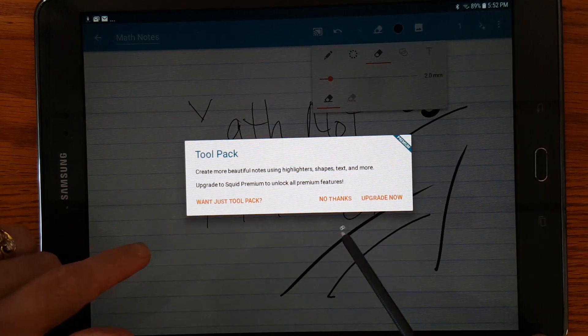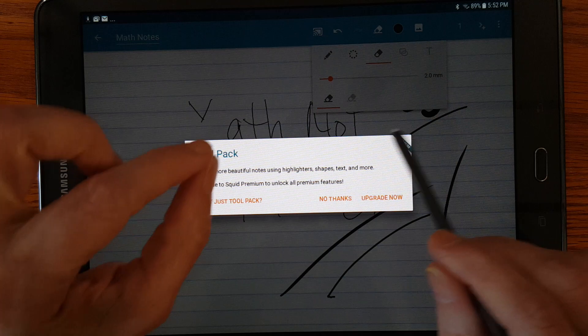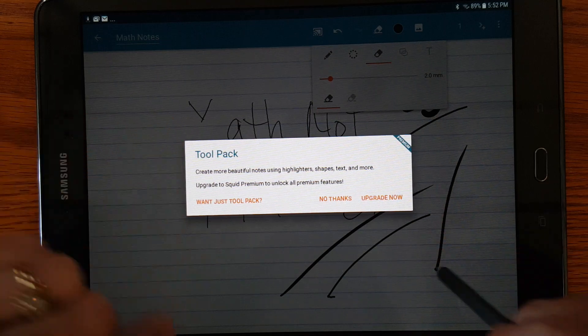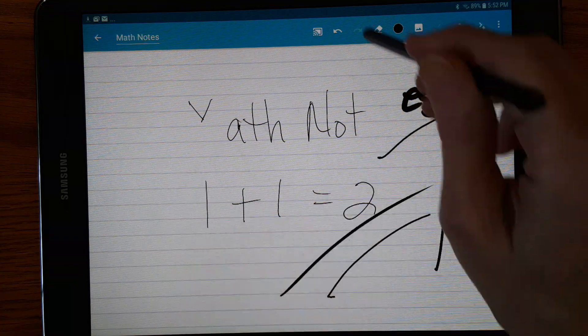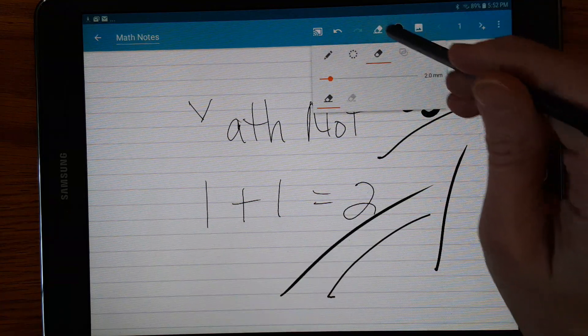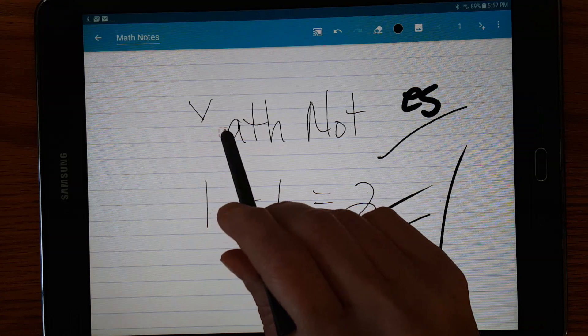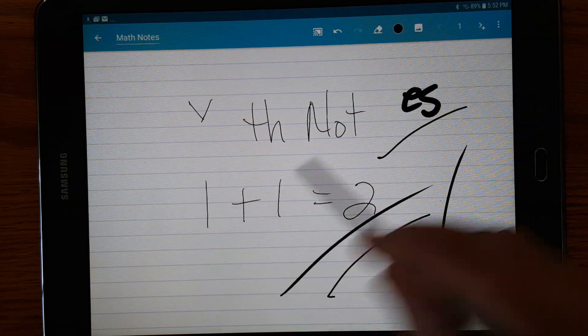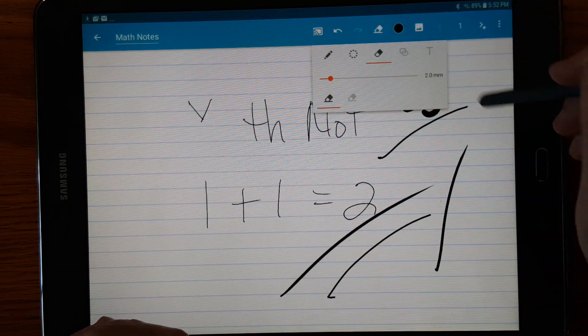If you want to erase just a small area, you have to pay to upgrade to that. So the eraser you get, you can change the size of it, but it erases the entire pen stroke. And that's similar to S-Note. That's what S-Note did.